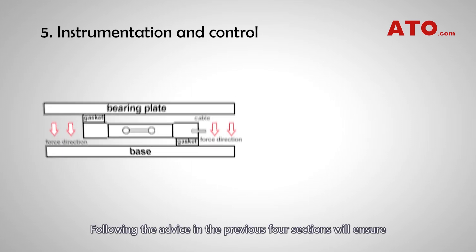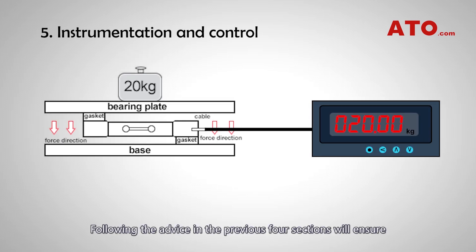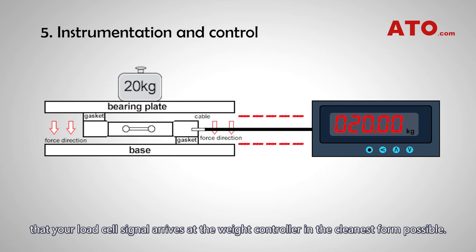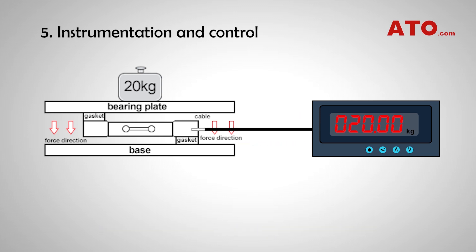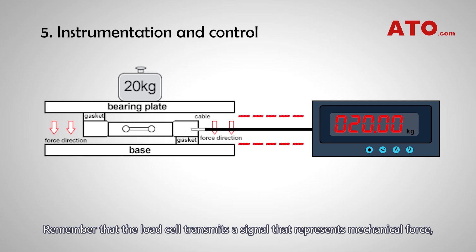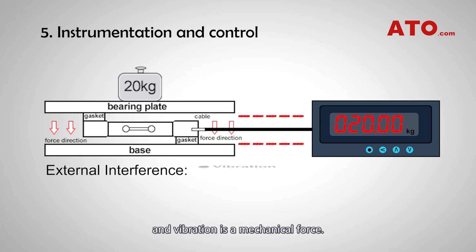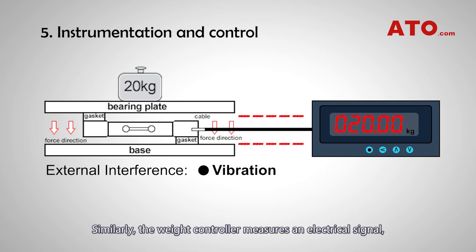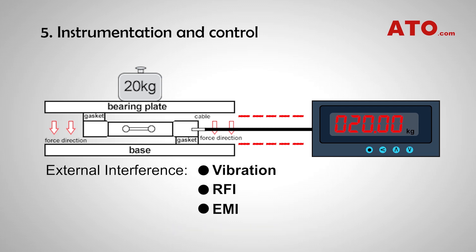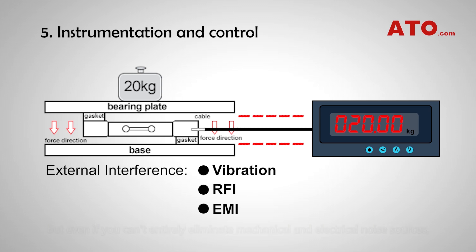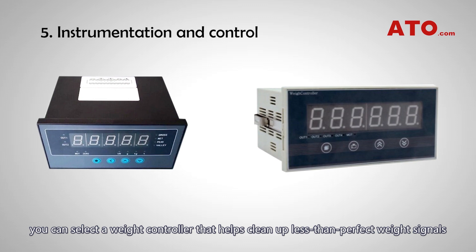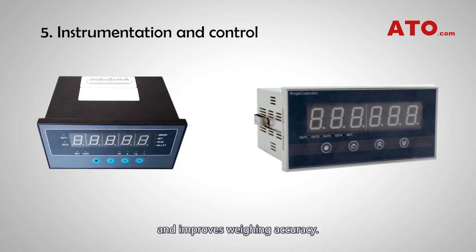Instrumentation and control. Following the advice in the previous four sections will ensure that your load cell signal arrives at the weight controller in the cleanest form possible. But chances are the signal won't be absolutely clean. Remember that the load cell transmits a signal representing mechanical force, and vibration is a mechanical force. Similarly, the weight controller measures an electrical signal, and RFI and EMI are electrical signals. But even if you can't entirely eliminate mechanical and electrical noise sources, you can select a weight controller that helps clean up less-than-perfect weight signals and improves weight accuracy.